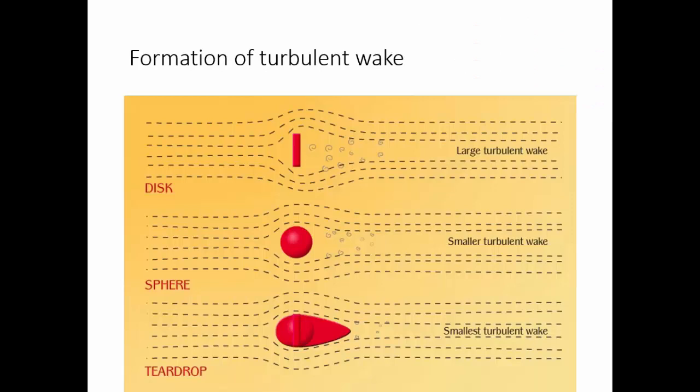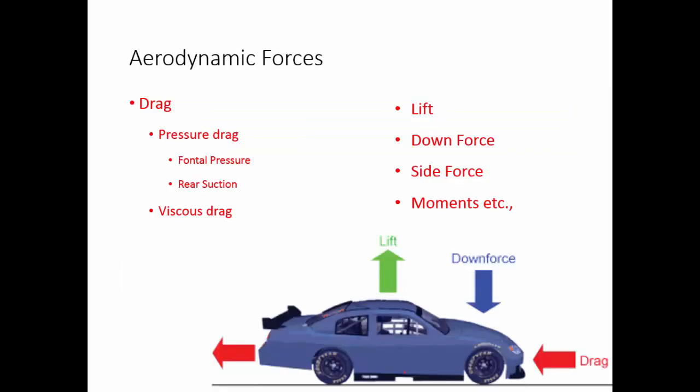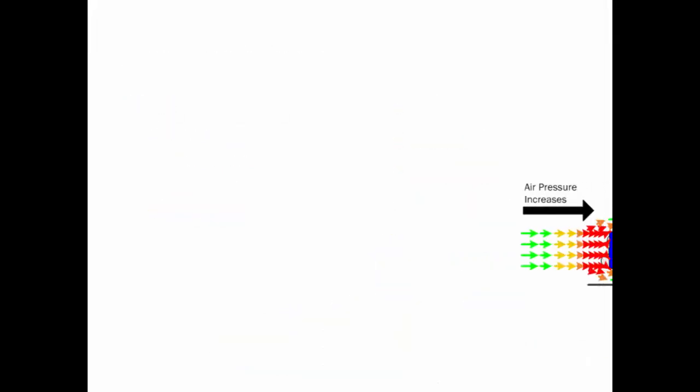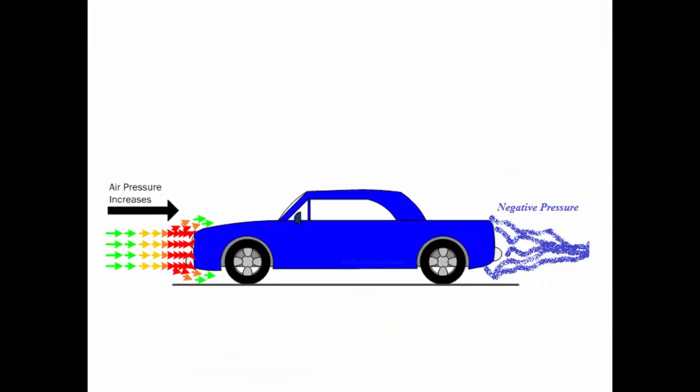To summarize, pressure drag is a predominant component that is to be considered in aerodynamic design, which is actually a combined effect of frontal pressure accumulation and the rear suction. Streamlining a vehicle body can reduce the pressure drag; however, it cannot be eliminated completely. Thank you.